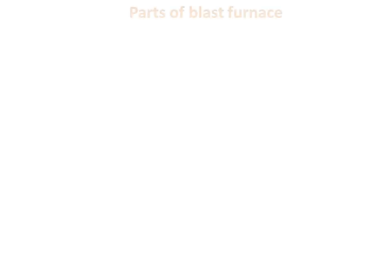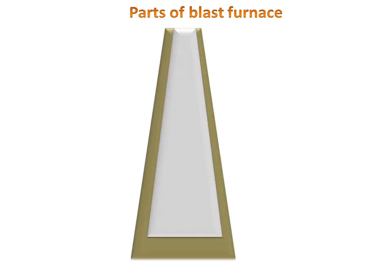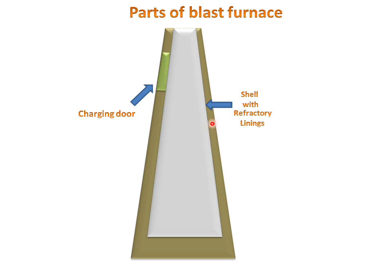Now we will discuss about the parts of the blast furnace. We have a shell with a charging door, from which we will throw charge in the furnace. This is the shell with refractory linings, which are used for preventing heat loss.